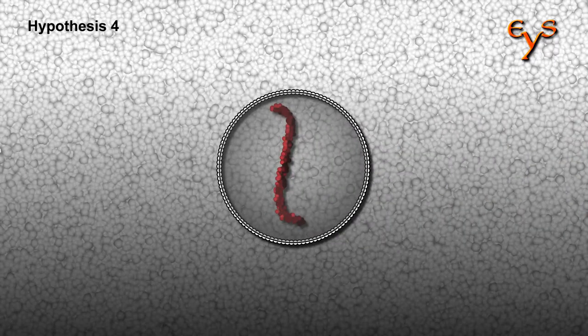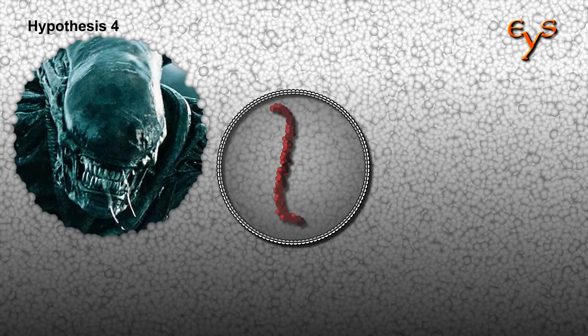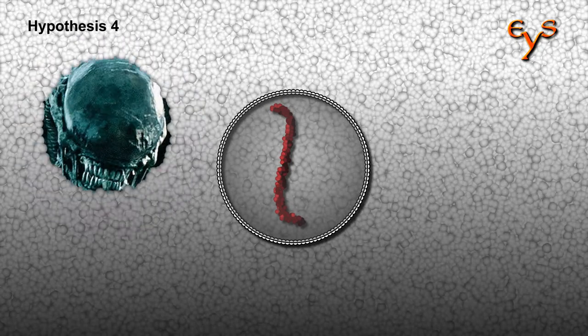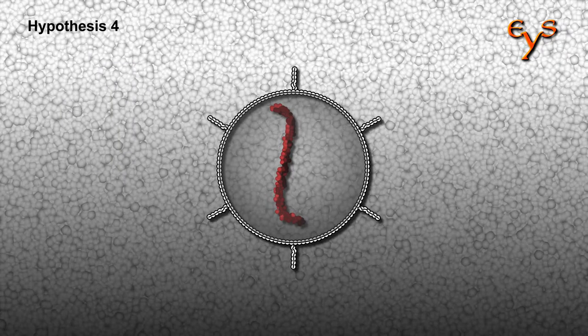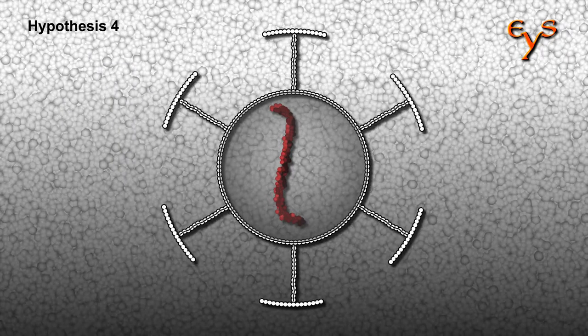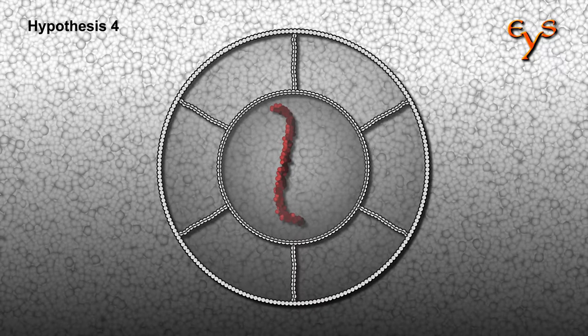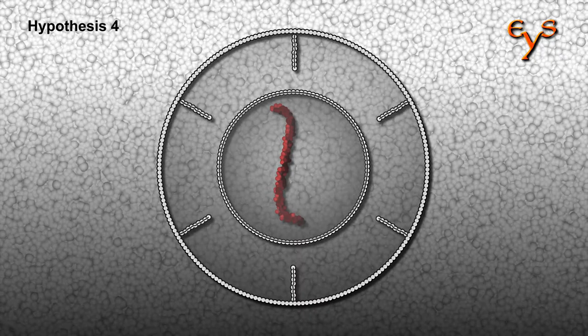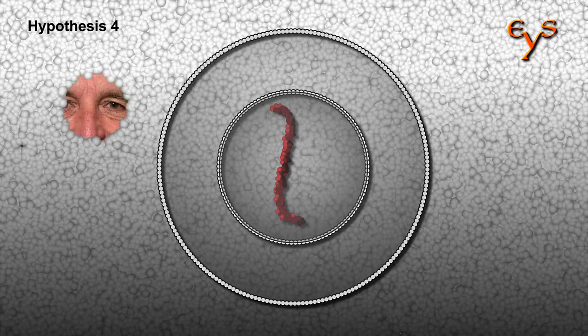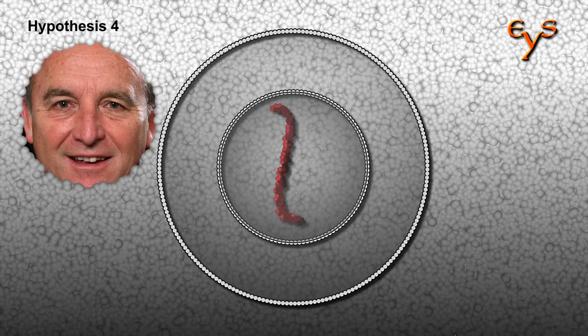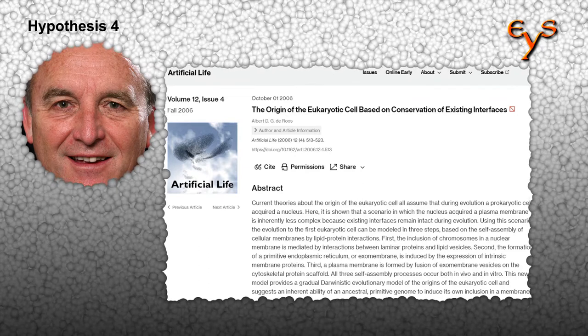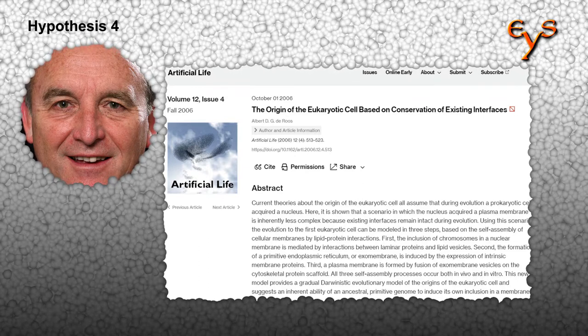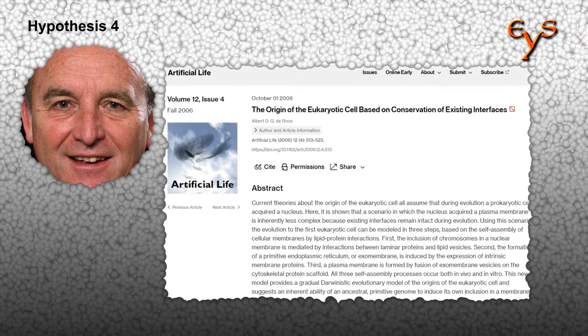It might at first seem a little too outlandish, but it is not. It suggests that an ancient cell membrane extruded outwards, creating a new outer cell membrane. This concept is supported by in vivo and in vitro observations presented by Albert DG de Rousse in a journal named Artificial Life in 2006, in his paper The Origin of the Eukaryotic Cell Based on Conservation of Existing Interfaces.